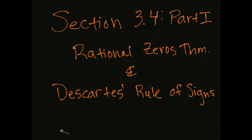The first part of section 3.4 is on the Rational Zeros Theorem and Descartes' Rule of Signs. We are studying real zeros of polynomials in order to graph them and work further with them.